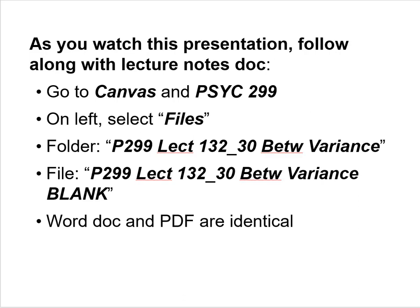Go to Canvas, go to Psych 299, and on the left side select Files. That'll reveal a bunch of folders. Go to the folder called Psych 299 Lecture 132.30 Between Variance Within. There you'll see two files you can download — both called Psych 299 Lecture 132.30 Between Variance Blank. One is a Word document and one is a PDF. If you have a choice, it's best to open the Word document so you can type in the blanks as you go through the lecture.